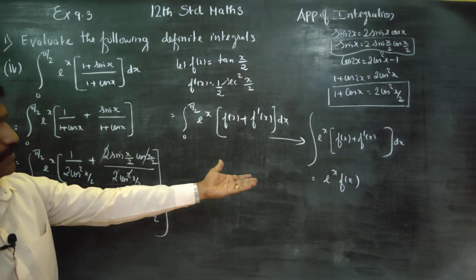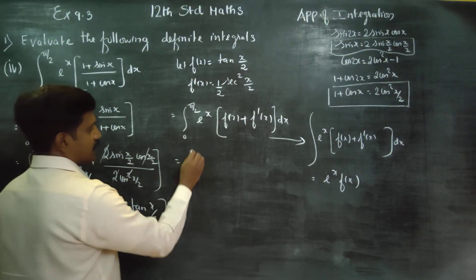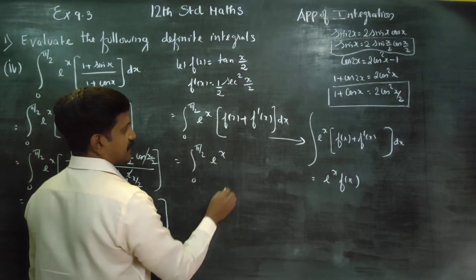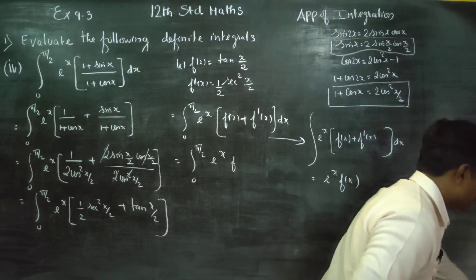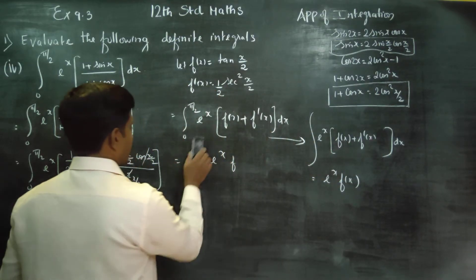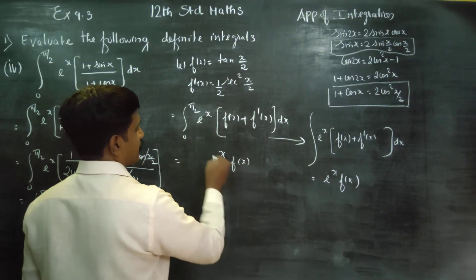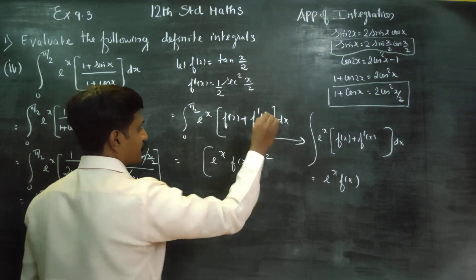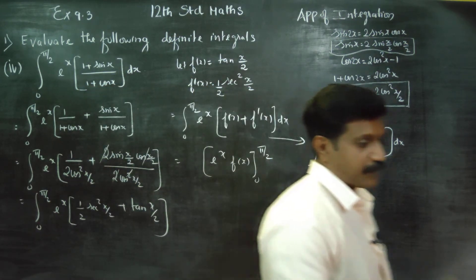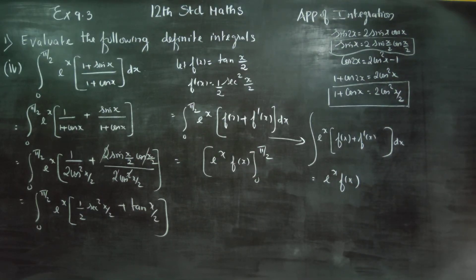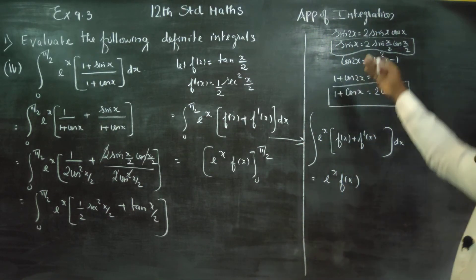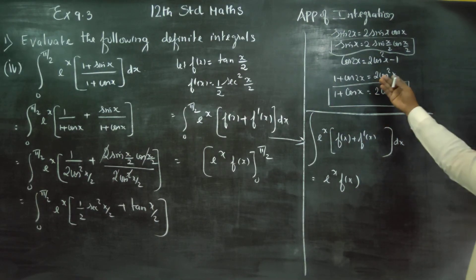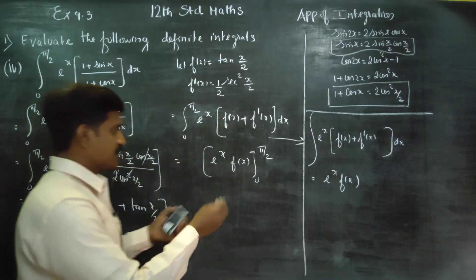It matches identically with this formula. Therefore, applying the result from 0 to π/2, the answer is e^x · f(x) evaluated at the limits. This formula gives us the result directly — no further integration steps are needed. The integrand is entirely in trigonometry form.